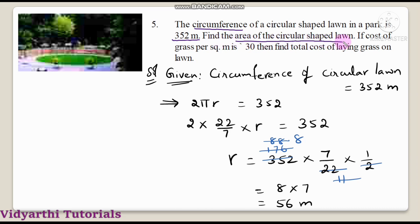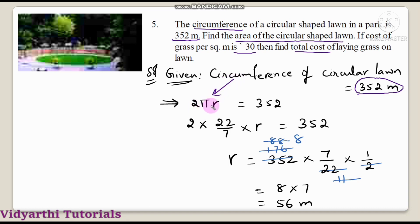Using circumference formula 2 pi r equals 352: substituting pi as 22 by 7, we get 2 into 22 by 7 into r equals 352. Transposing, r equals 352 into 7 by 22 into 1 by 2. After cancellation — 11 eights are 88, then 8 into 7 — we get radius equal to 56 meters.